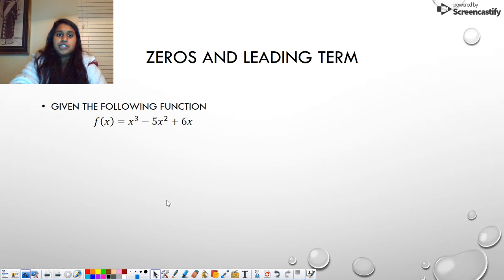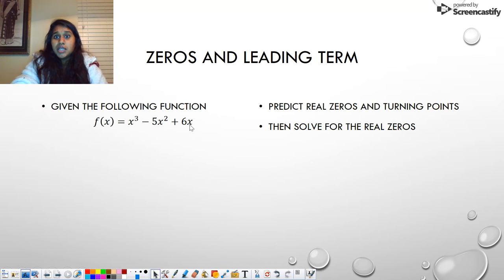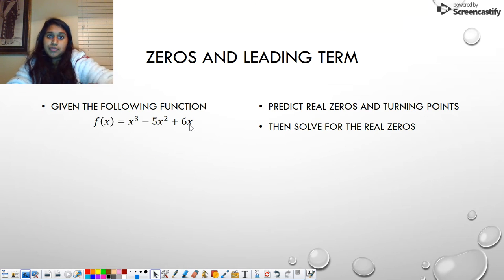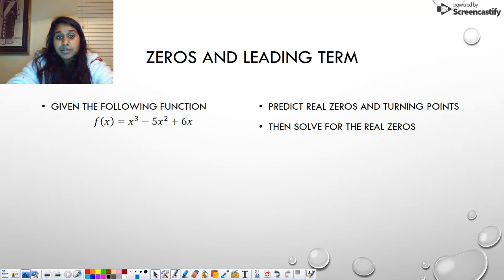So if we have this function, X cubed minus five X squared plus six X, we can factor that out. The first thing I'm going to notice is that there's an X in every term. Let's pause and predict how many real zeros, how many turning points. So what's my n value. That's my largest number, right?